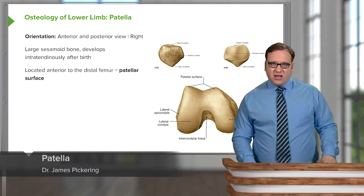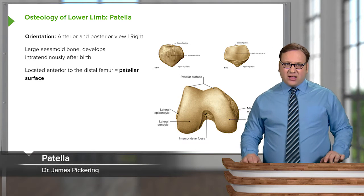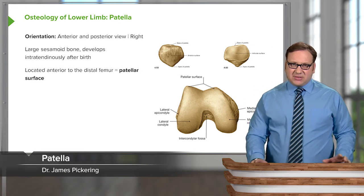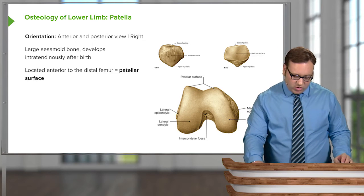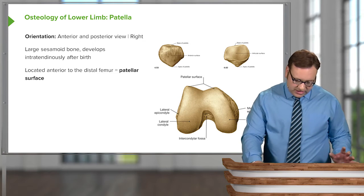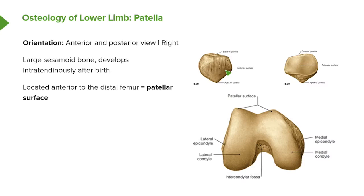Now let's have a look at the patella. We can see the patella in this anterior and posterior view — this is a right patella. It's a large sesamoid bone and it develops intratendously after birth, as an ossification of the tendon within the patellar tendon.